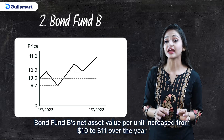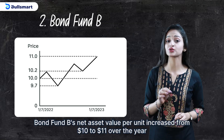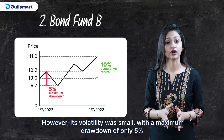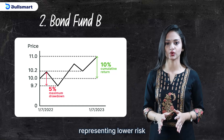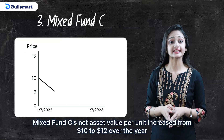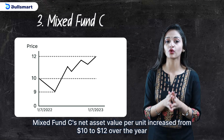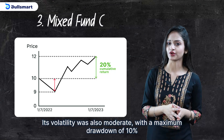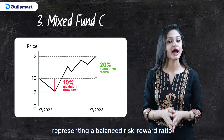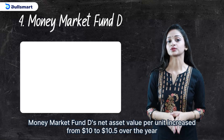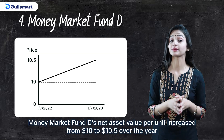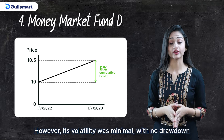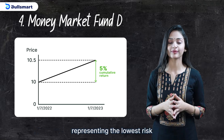Bond fund B's net asset value per unit increased from $10 to $11 over the year with a cumulative return of 10%, a weaker performance. Bond fund C's net asset value per unit increased from $10 to $12 over the year with a cumulative return of 20%, moderate performance. Its volatility was also moderate with a maximum drawdown of 10%, representing a balanced risk-reward ratio. Money market fund D's net asset value per unit increased from $10 to $10.50 over the year with a cumulative return of 5%, the weakest performance. However, its volatility was minimal with no drawdown, representing the lowest risk.